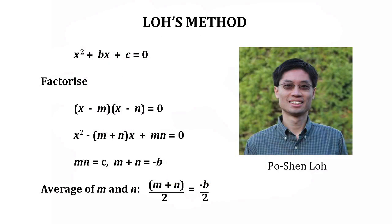Now let's look at Dr. Loh's new method. We'll start with a quadratic in the form x squared plus bx plus c equals 0. If the coefficient of x squared is a number a other than 1, we can simply divide through by this to start with. Now, suppose this factorizes as x minus m times x minus n equals 0, so that m and n are the solutions we're looking for. Multiplying out, we get x squared minus (m plus n)x plus mn equals 0. So we're looking for values of m and n that multiply to give c and that add to give minus b.